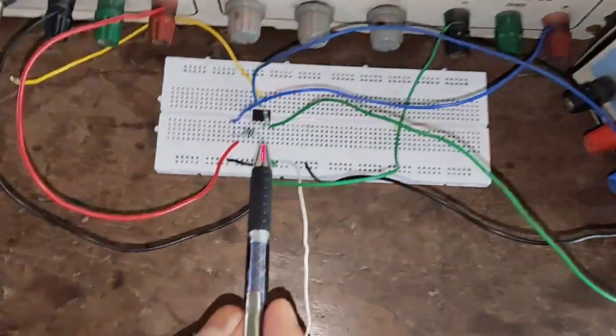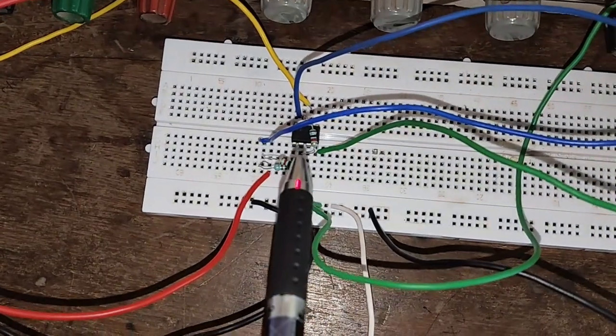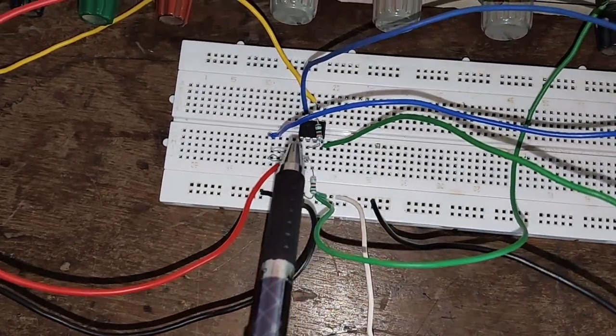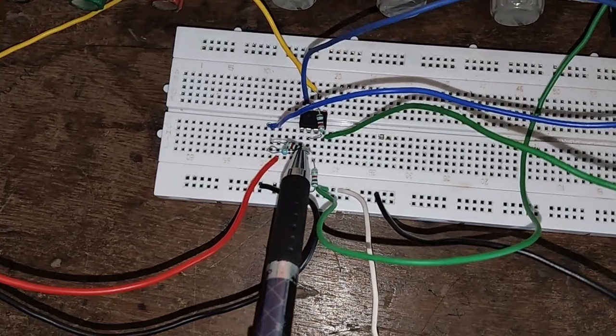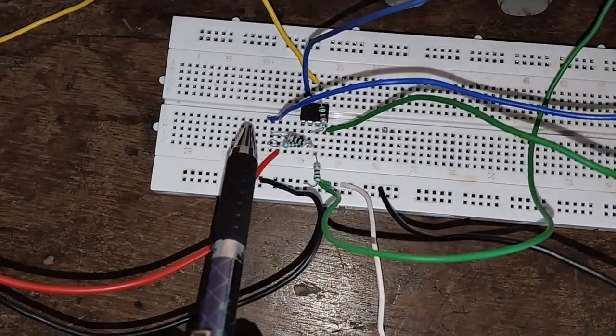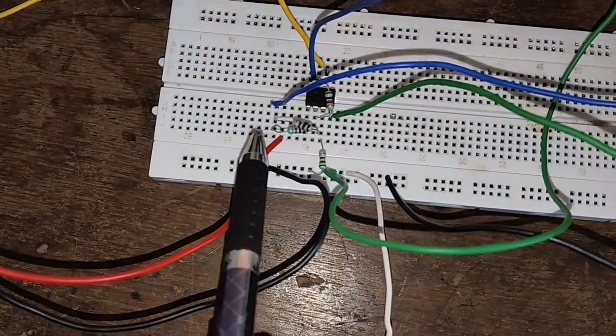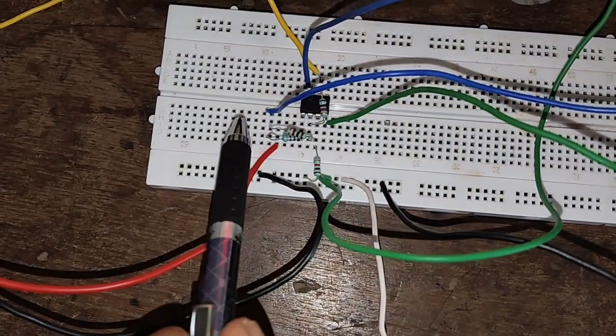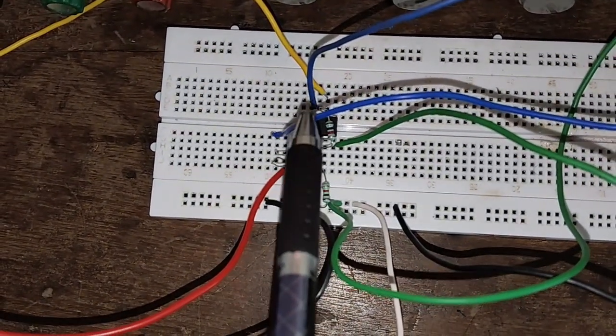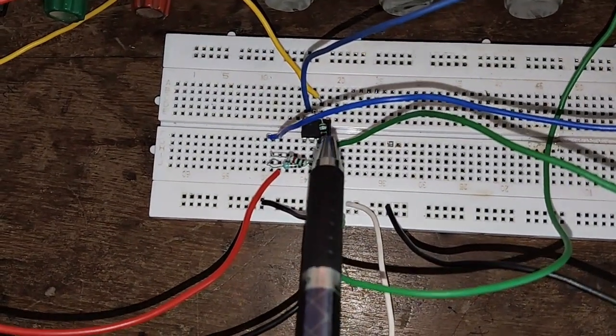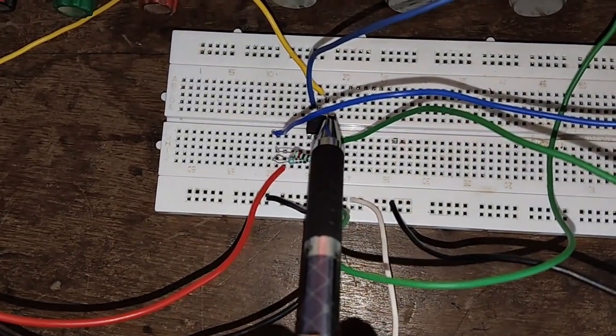On this breadboard, we can see that the op amp IC741 is connected. Two resistors are connected at pin number 3 and one resistor is connected at pin number 2. At pin number 3, we are giving V2 and at pin number 2, we are applying V1. And between pin number 2 and 6, one more resistor is connected that is called feedback resistor.